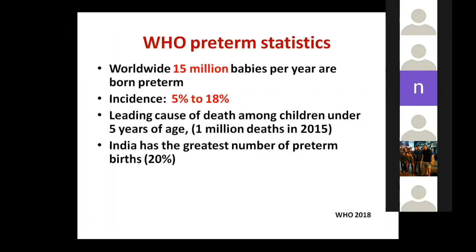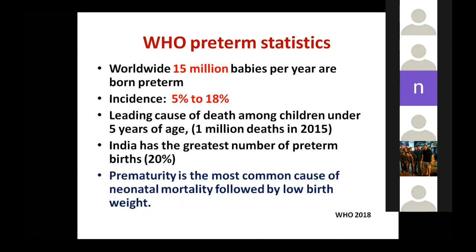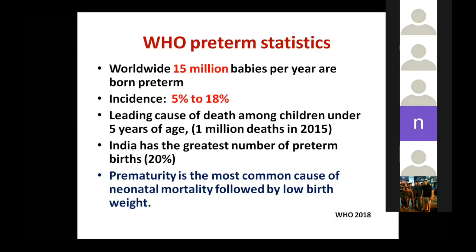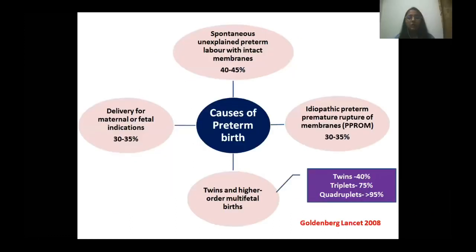Worldwide, almost 15 million babies are born preterm, and India has the maximum number of preterm births at 20 percent, with an overall incidence of 11 percent. Prematurity is the most common cause of neonatal mortality, followed by low birth weight.